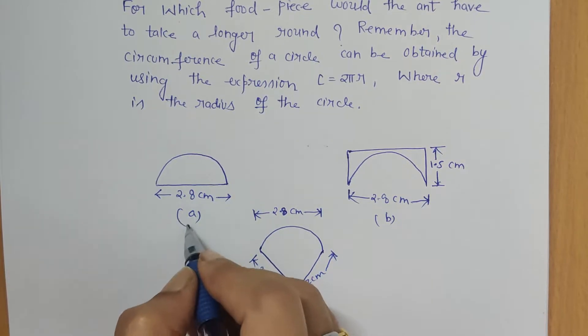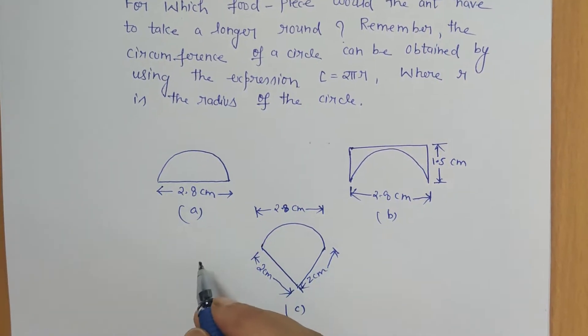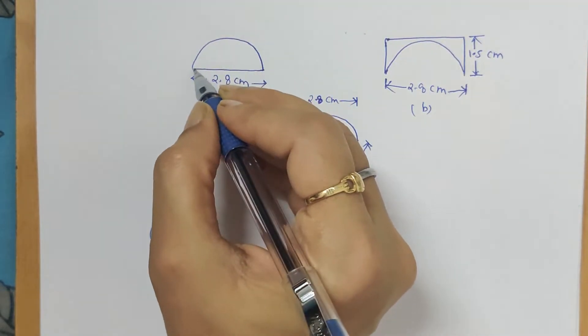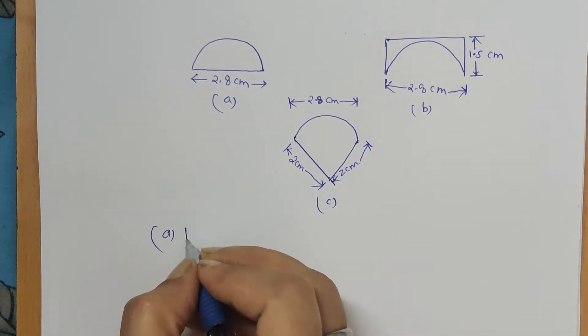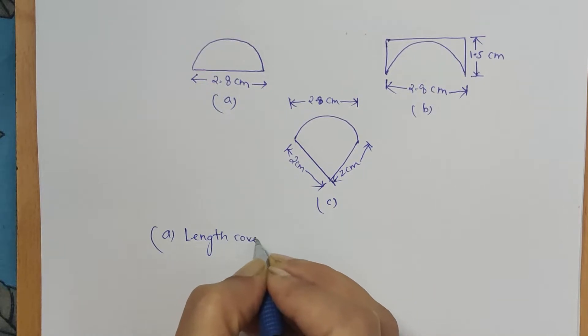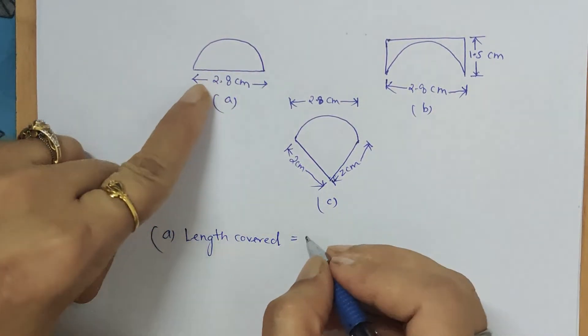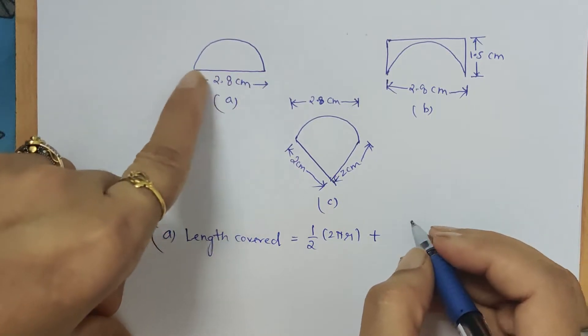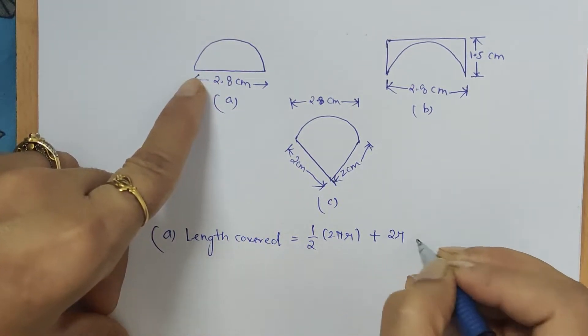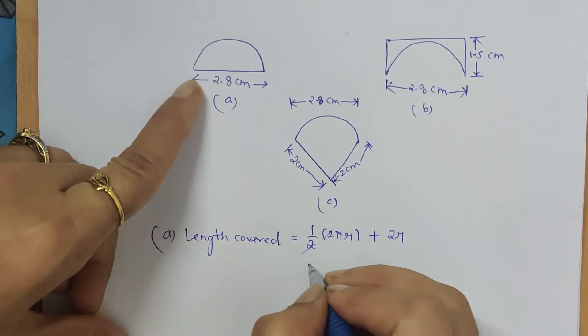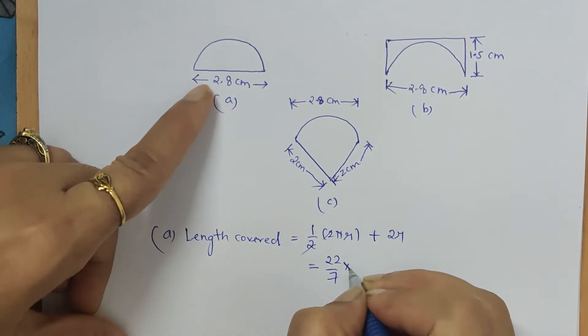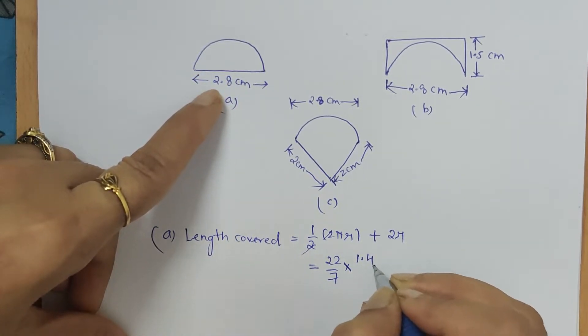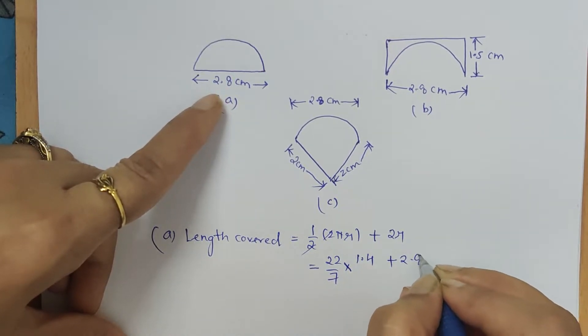In food piece A, we calculate the length covered. It is equal to half of 2πr plus this, which is nothing but the diameter of the half circle, so it is 2r. So 2 and 2 gets cancelled, and π is 22/7, and here the radius is half of the diameter, so 1.4 plus 2.8.